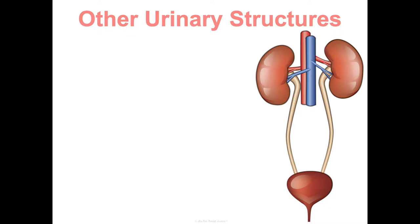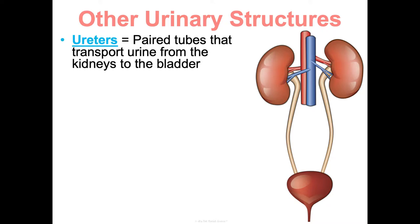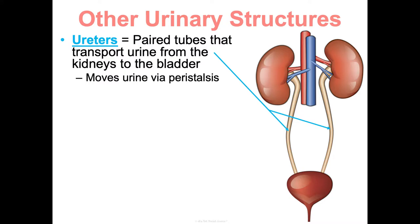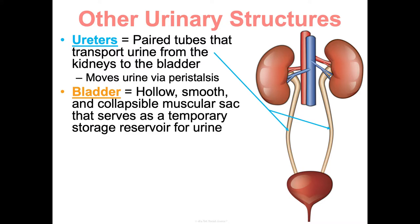The other structures of the urinary system: ureters are paired tubes that transport urine from the kidneys to your bladder using peristalsis. The bladder is a hollow, smooth, collapsible muscular sac that serves as a temporary storage reservoir for urine. A full bladder can comfortably hold about 500 milliliters of liquid, but it can stretch and expand to hold up to one liter.